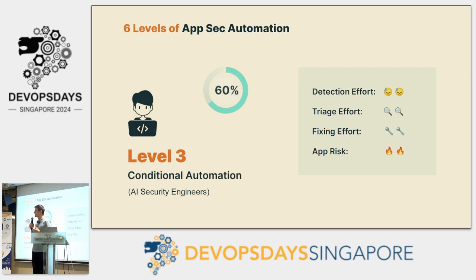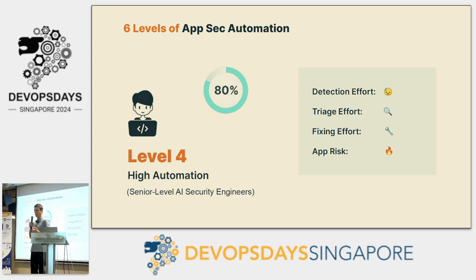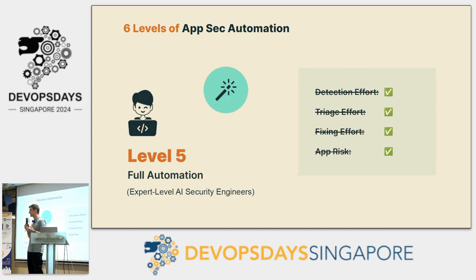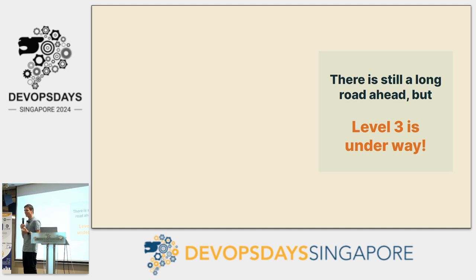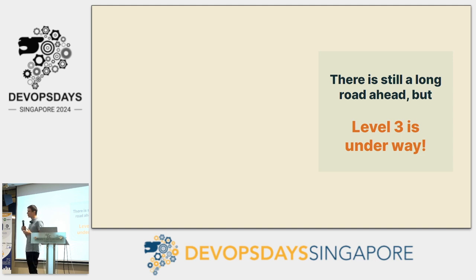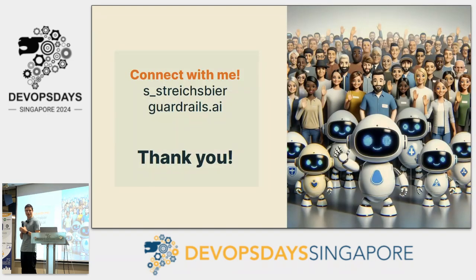At level three, AI security engineers look at the code, triage it, and find fixes based on the security context of the application. Where it's not confident, it has a human in the loop and can escalate with full context. Level four is where AI security engineers get closer to human capability and can actually identify logic issues in your application — mostly autonomous but steerable for special use cases. Level five is where you are at the expert level: fully autonomously identifying and fixing vulnerabilities across your entire organization based on full business context. There's still a long road ahead, but level three is underway right now. I hope this ignited your curiosity — connect with me on X or visit guardrails.ai.